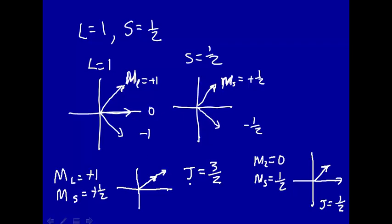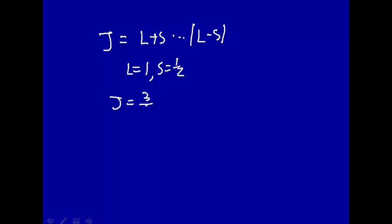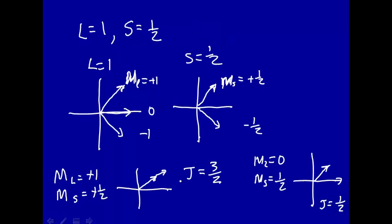Taking all combinations, J can be L plus S, which is three halves, down to L minus S in integer steps, which is one minus one half equals one half. So there are just two values: J equal three halves and J equal one half, corresponding to adding the vectors in alignment or in opposition.